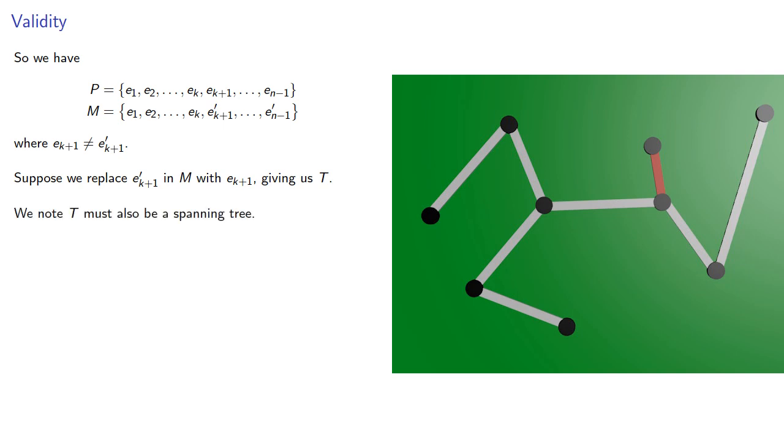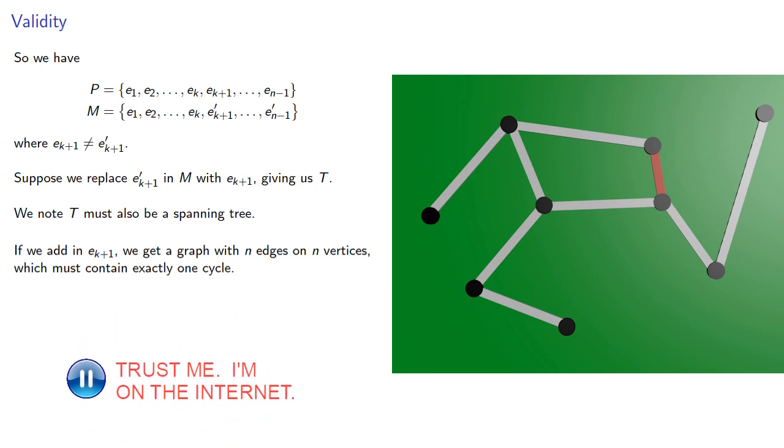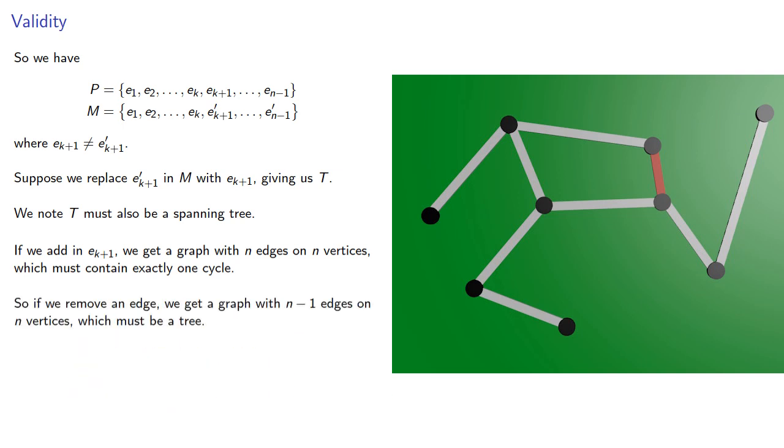We note that T must also be a spanning tree. That's because if we add in the edge from Prim's algorithm, we get a graph with n edges on n vertices, which must contain exactly one cycle. So, if we remove an edge, we get a graph with n minus one edges on n vertices, which must be a tree.